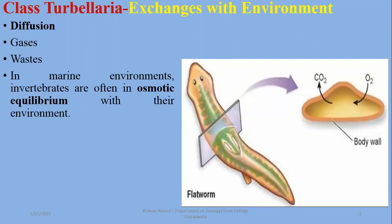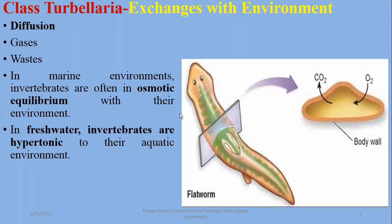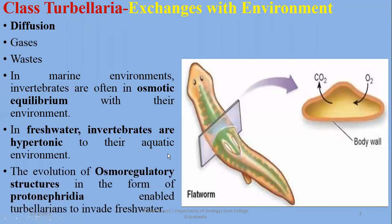Marine turbellarians are isotonic with their environment. But freshwater organisms are hypertonic — that is, they have higher salt concentrations internally. To regulate excess water in these hypertonic internal conditions, planaria have developed osmoregulatory structures called protonephridia.